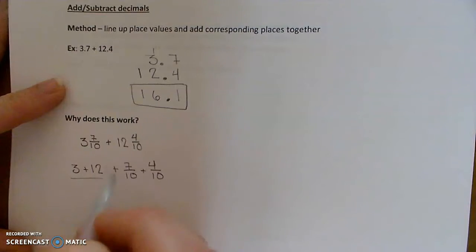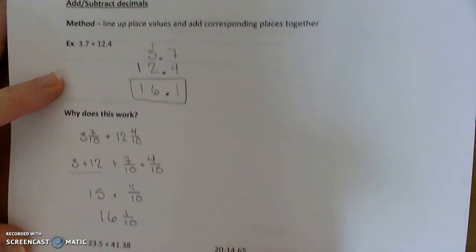So then the 3 plus the 12, there's your 15, and then the 7, this is 11 tenths, which is really 1 and 1 tenths, so this will become 16 and 1 tenths.